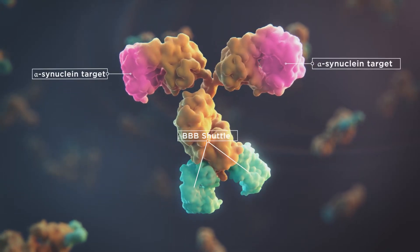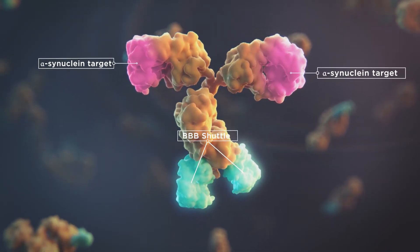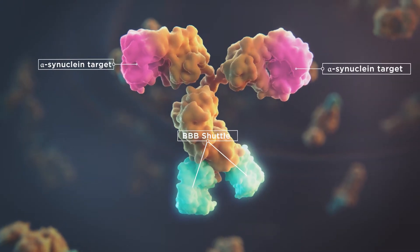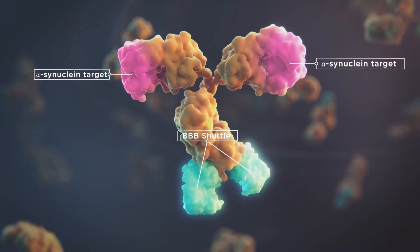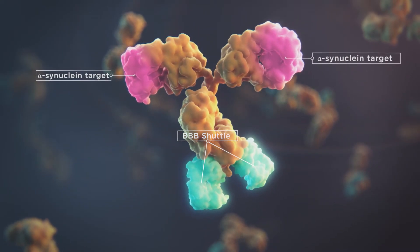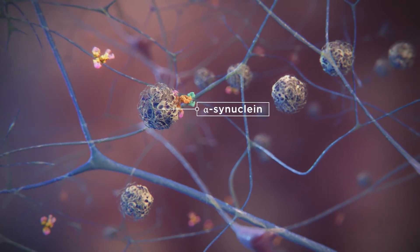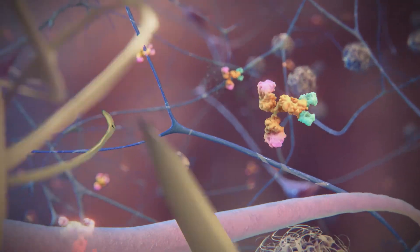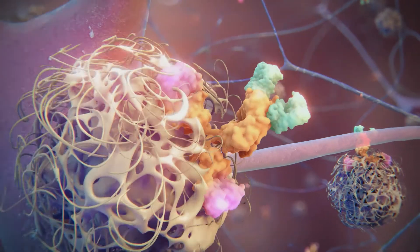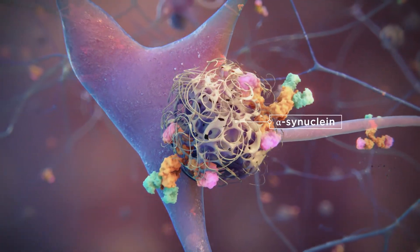ABL-301 is a novel therapeutic antibody with high specificity for abnormal aggregated alpha-synuclein, developed for the treatment of PD. Once inside the brain, it targets abnormal aggregated alpha-synuclein with superior therapeutic efficiency.